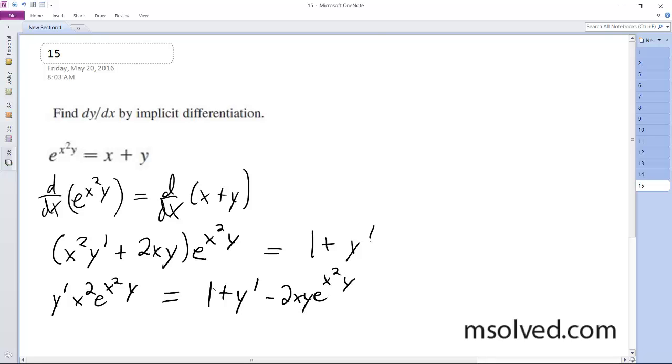And now all this is just going to be divided by, so y' is equal to 1 plus y' minus 2xy e^(x²y) divided by x² e^(x²y).